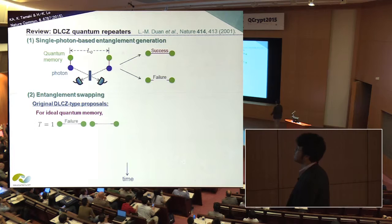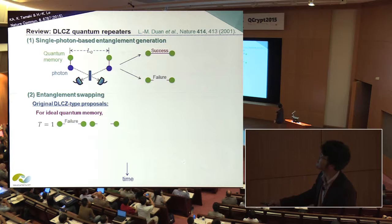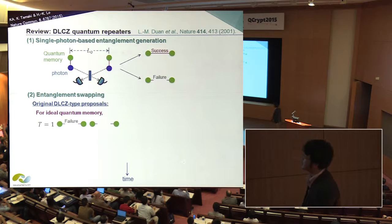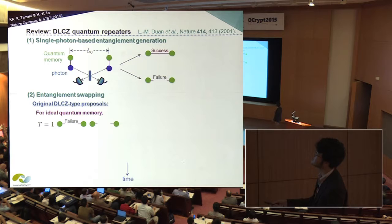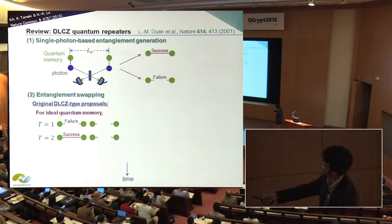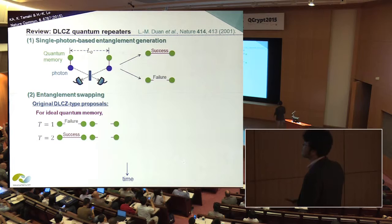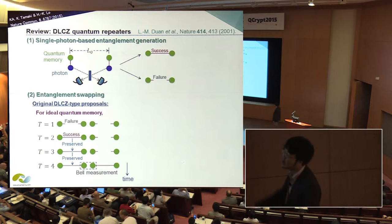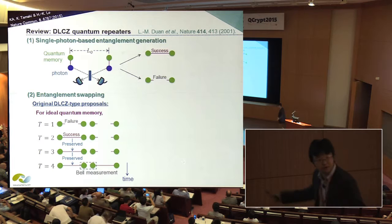The protocol proceeds as follows. For simplicity, consider two end parties separated with just a single repeater. The intermediate node starts the entanglement generation process in parallel fashion. Suppose in the first trial we are unlucky and both entanglement generation processes fail. In the second trial, the left-hand side entanglement generation succeeds but the right-hand side fails. However, we have quantum memory here. Once entanglement is established, it is preserved until the right-hand side entanglement generation process succeeds. After entanglement is established on both sides, we perform the Bell measurement. This is the protocol of the DLC quantum repeater.